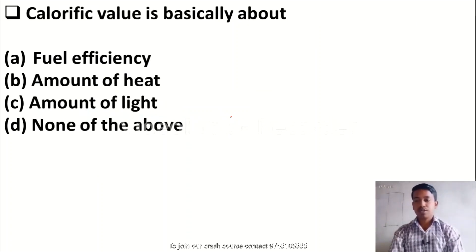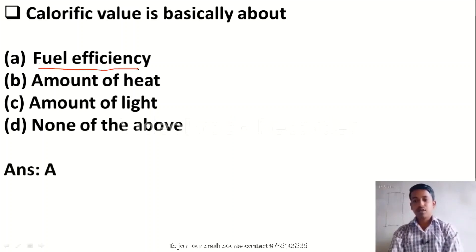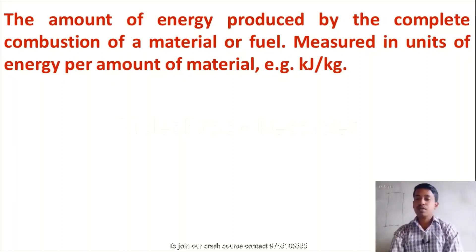The next question is: caloric peak value is basically about — Option A, fuel efficiency; Option B, amount of heat; Option C, amount of light; Option D, none of the above. The right answer is fuel efficiency. Caloric peak value is basically about fuel efficiency — the amount of energy produced by the complete combustion of fuel. It is measured in energy per amount of material.